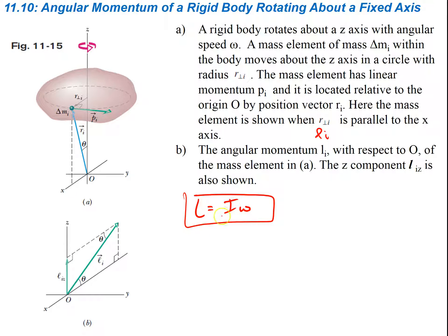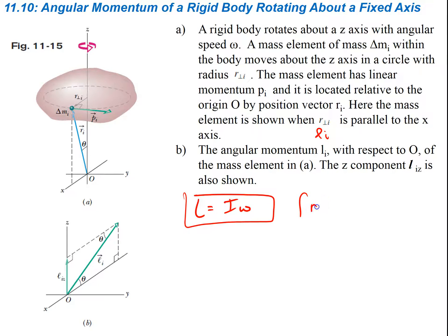Angular momentum equals the moment of inertia of the entire object multiplied by its angular speed omega. This is for a rigid, fixed body — a body that doesn't change, is not pliable in any way, so the mass stays where it is.